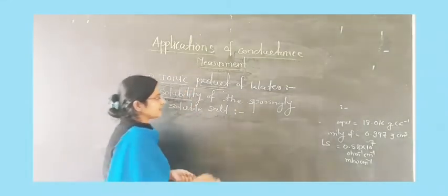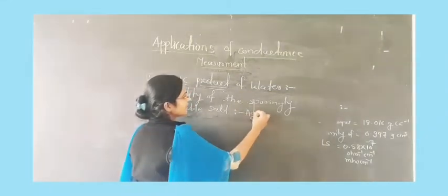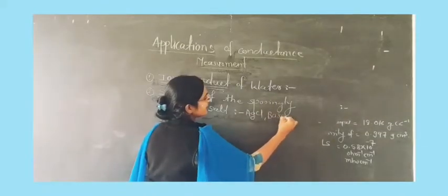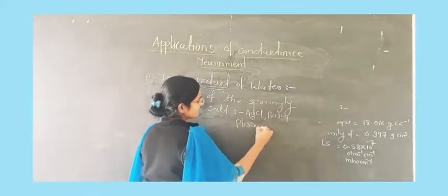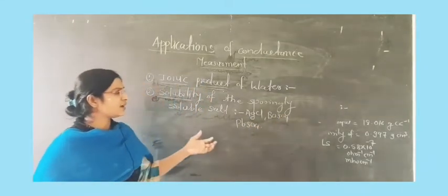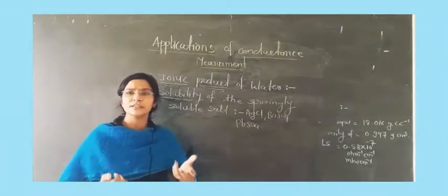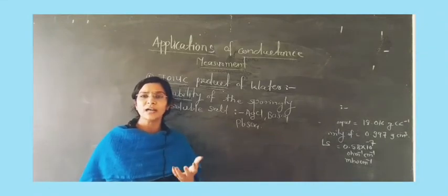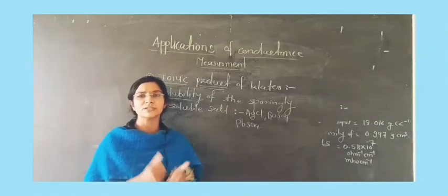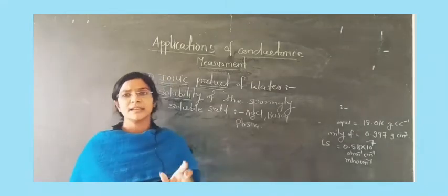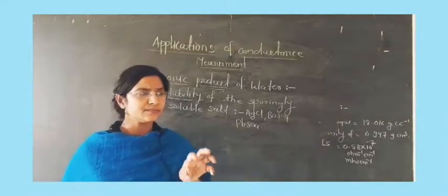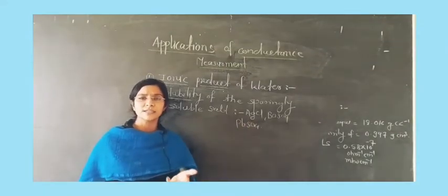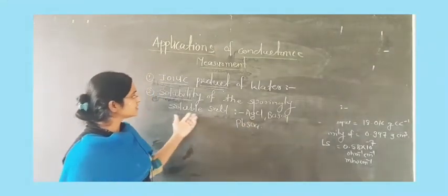But some salts like silver chloride, barium sulphate, and lead sulphate are salts which cannot be easily dissolved in water. In that case, we are not able to find out how many ions are present in the solution. When such a disturbance is observed, how can we find out the conductance of such a sparingly soluble salt?